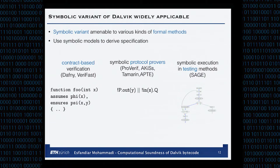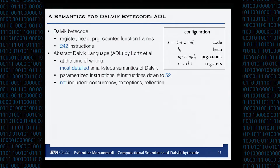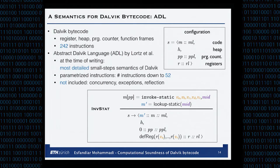Dalvik itself is a register-based language. It has a heap, a program counter, function frames, and a configuration in Dalvik semantics that has a stack of codes, a heap, a stack of program counters, and a stack of registers — these are the function frames. We took small-step semantics work by Stefan Lortz and others, which at the time of writing was the most detailed we could find. It has parameterized instructions and covers 52 instructions, but does not include concurrency, exceptions, or reflections, and we inherit those limitations. Our result is independent of these things.